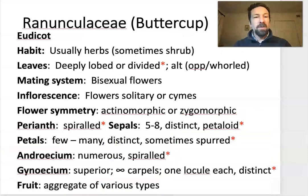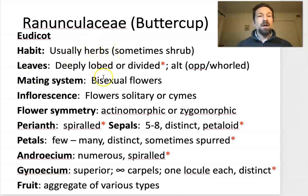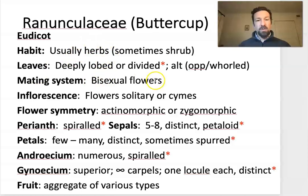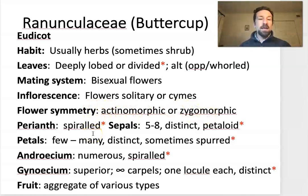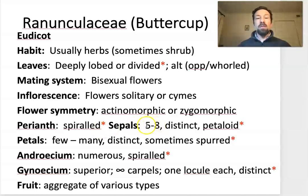Let's go over some characteristics of the family. These are most commonly herbs, and the leaves are usually deeply lobed or divided. Flowers are perfect or bisexual, and solitary or in cymes — the same as in Papaveraceae. Flowers can be actinomorphic or zygomorphic, which was also true of Papaveraceae. In this case, the perianth — the sepals and petals — are spiraled. There are more sepals than in Papaveraceae, typically five to eight. There's not a lot of fusion in these families; the sepals are separate from one another.